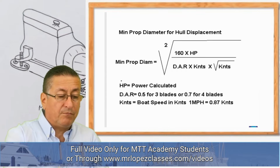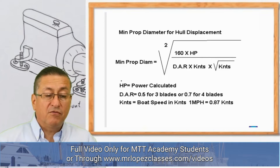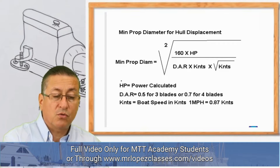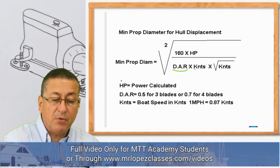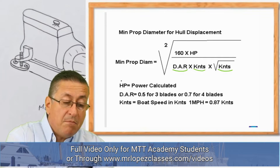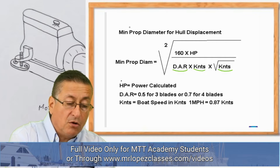This is the typical formula used to calculate the diameter of the propeller. The diameter should be equal to the square root of 160 times the horsepower, divided by the DAR times the speed of the boat in knots, all under the square root. This gives the minimum propeller diameter for planing hulls.